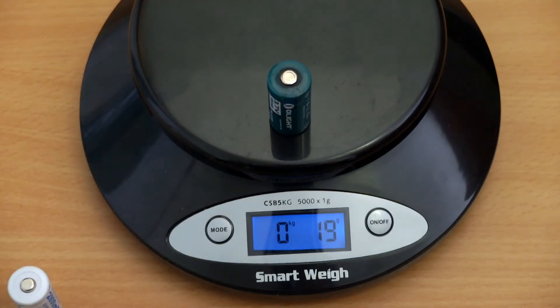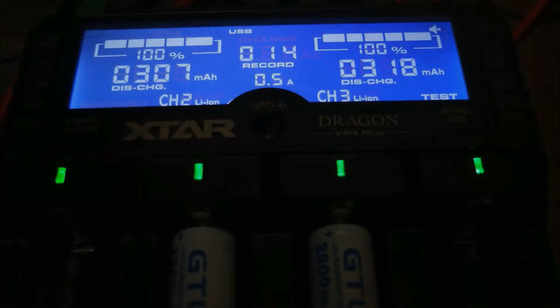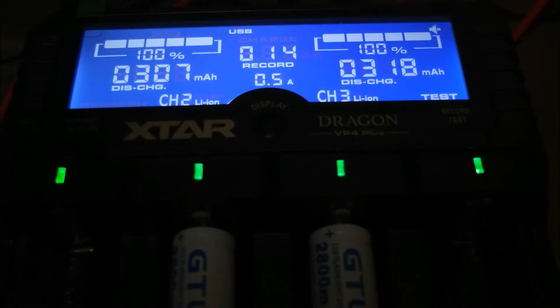On to the capacity discharge test. The results are pretty bad - just over 300 milliamp hours for both cells. That's a massive difference between their claimed capacity and what it actually delivers.